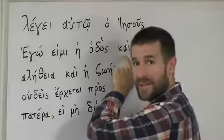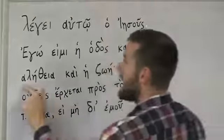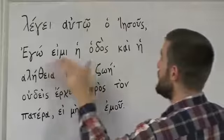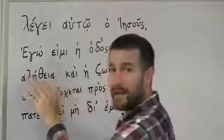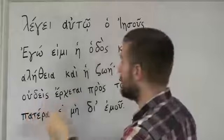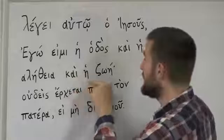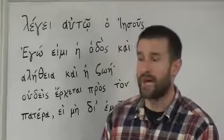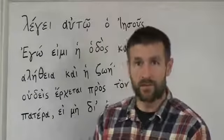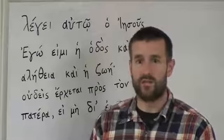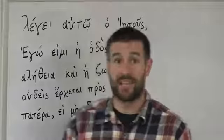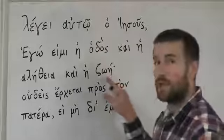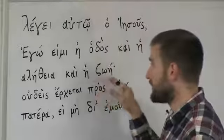Kai — remember from the last verse — means 'and.' Hē alētheia — alētheia means 'truth.' So: egō eimi hē hodos, kai hē alētheia — I am the way and the truth. Then kai hē zōē — and zōē means 'life.' We can remember that by the word 'zoology' or 'zoo' — it's the study of living things. Our words zoo and zoology come from the Greek word for life, zōē.